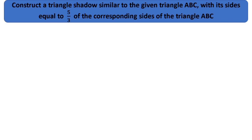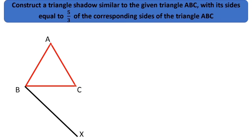Let's start construction. Draw a triangle ABC. Draw a ray BX making an acute angle with BC on the side opposite to vertex A.